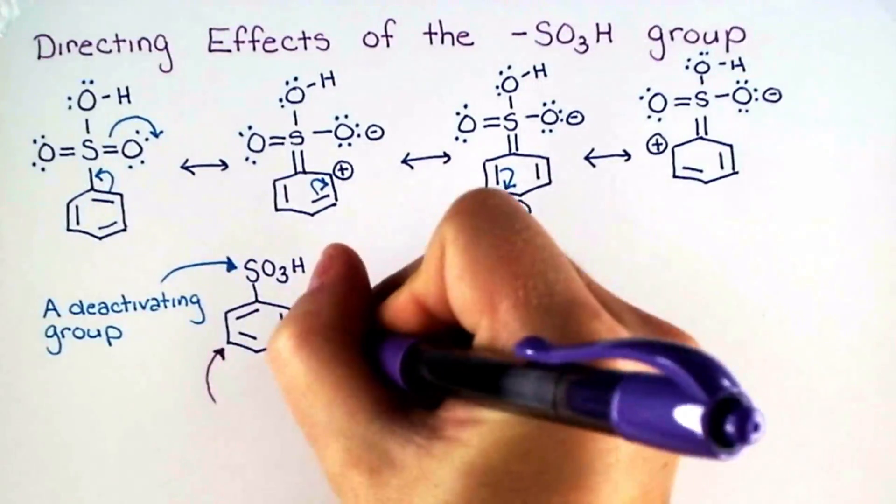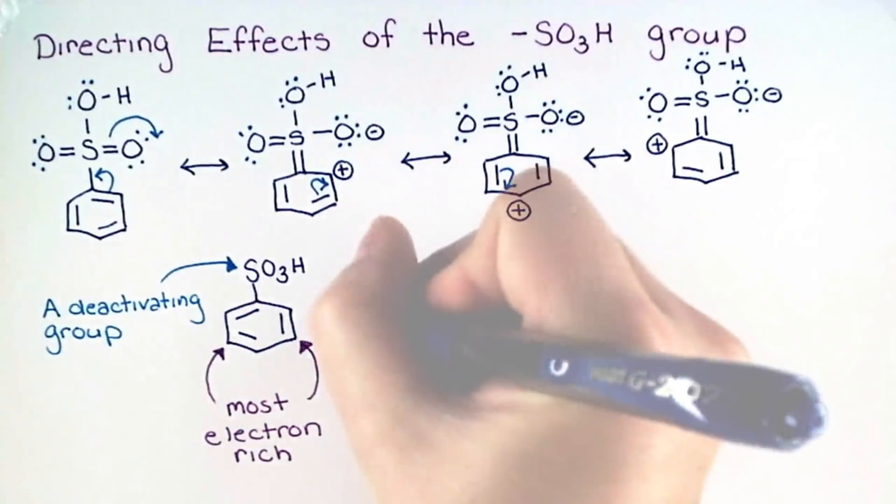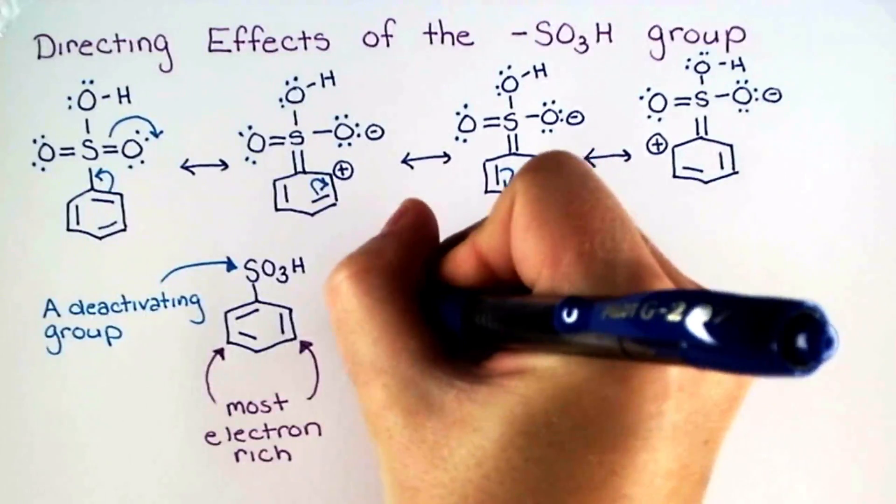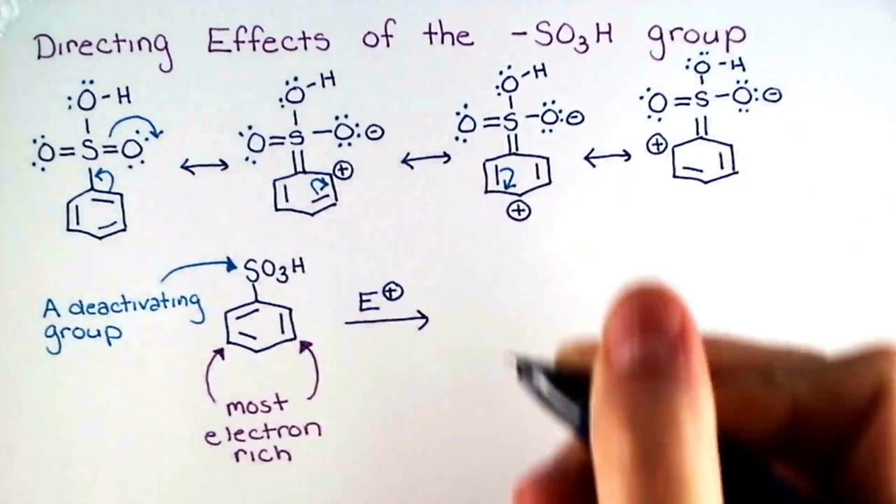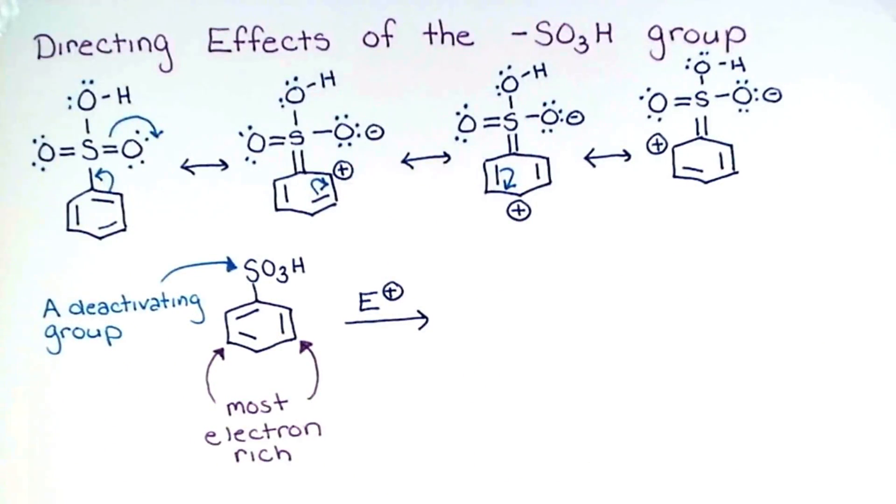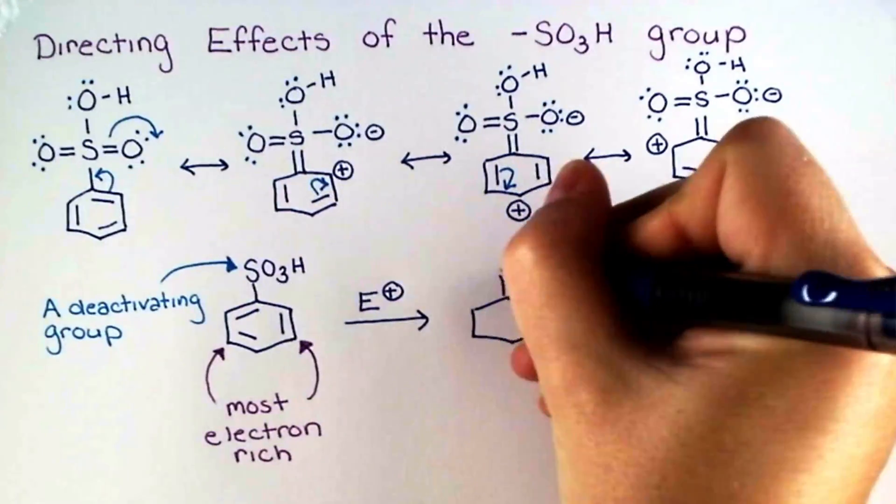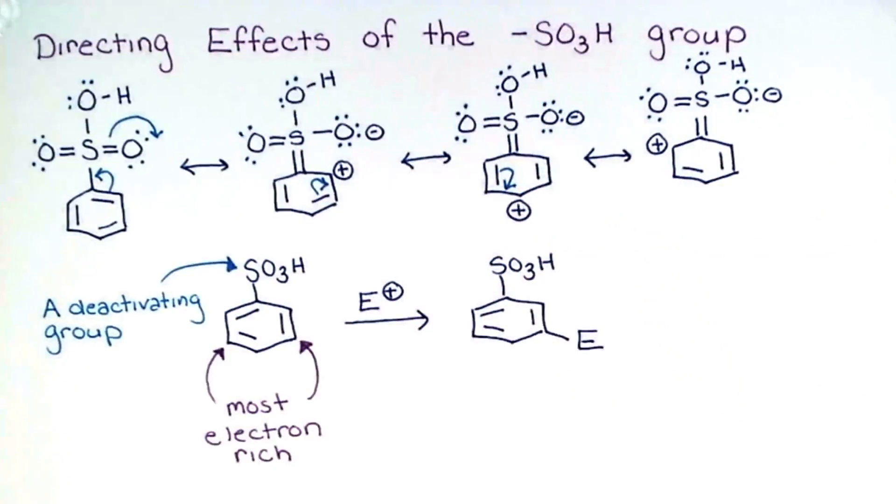On this compound, the metacarbons are the most electron rich. So when we treat benzene sulfonic acid with a powerful enough electrophile, remember the electrophile needs to be pretty powerful now that the ring is deactivated, the new group will be introduced at the meta position.